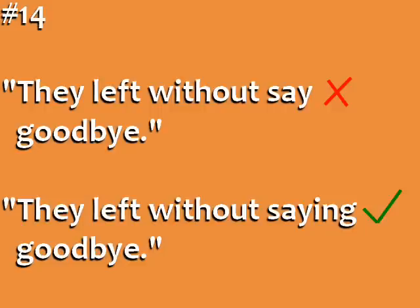Error number thirteen: 'They left without say goodbye.' When you use a verb after conjunctions and prepositions like after, before, since, when, while, without, instead of, and in spite of, the verb is generally in the -ing form. So the correct sentence is: 'They left without saying goodbye.'